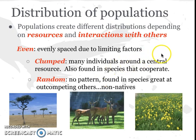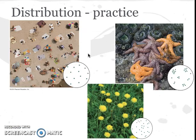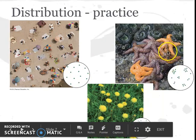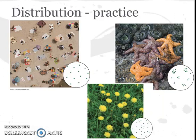The last of the three is 'random,' where there's no pattern, and it's found in species that are great at outcompeting others — for example, non-native species. These are the three ways that populations are organized: even, clumped, and random. Looking at some other examples, one would be evenly distributed, another random, and the last clumped together. That covers how populations can grow — looking at logistic and exponential growth — and the ways populations can be distributed through clumped, even, and random.